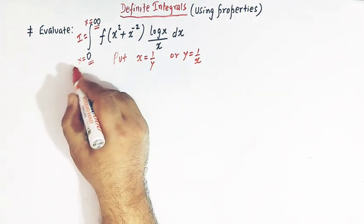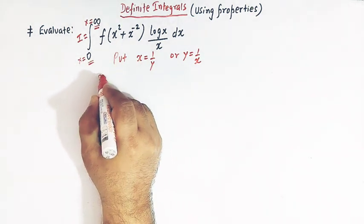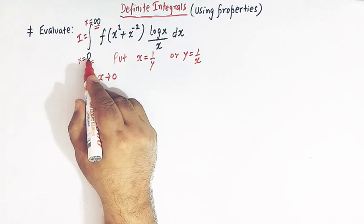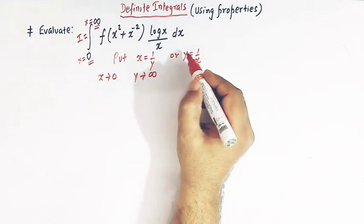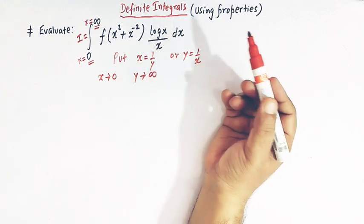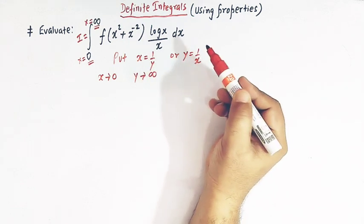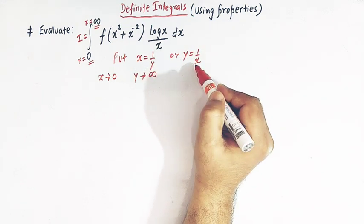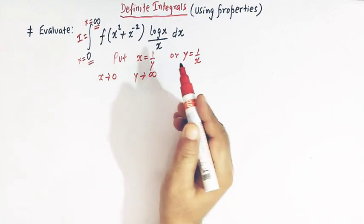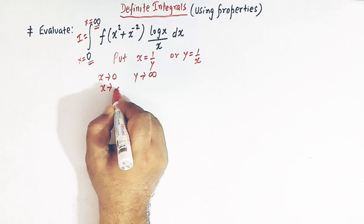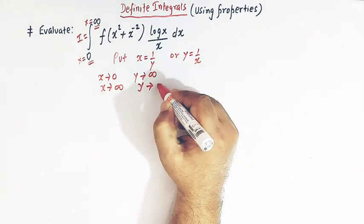We can also write y is equal to 1 over x. Now when x tends to 0, then y tends to infinity, because we are taking the substitution x equal to 1 over y. And when x tends to infinity, then y tends to 0.